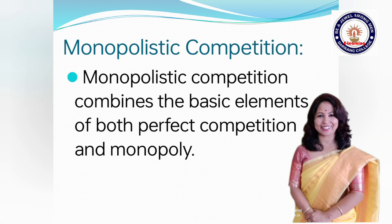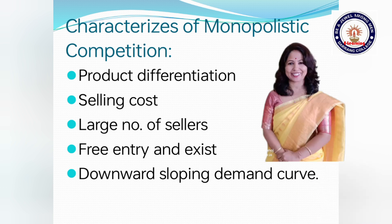Now we proceed to monopolistic competition, i.e. the monopolistic competitive market. The monopolistic competitive market combines the basic elements of both perfect competition and monopoly. Monopolistic competition refers to a market structure in which a large number of sellers sell differentiated products which are close substitutes for one another. Characteristics include: Number 1: product differentiation. Number 2: selling cost. Number 3: large number of sellers. Number 4: free entry and exit. Number 5: downward sloping demand curve. Product differentiation and selling cost are the two important characteristics in the monopolistic market, which are not found in other types of market like perfect competition and monopoly.